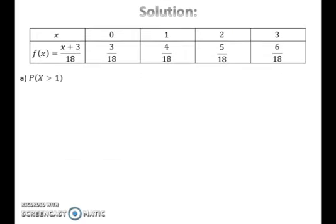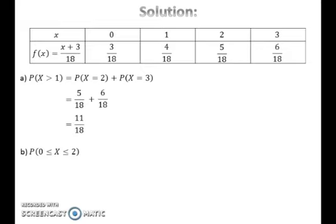To find the probability of x greater than 1, take the summation of P(X = 2) and P(X = 3). To find the probability of x from 0 to 2, take the summation of P(X = 0), P(X = 1), and P(X = 2).